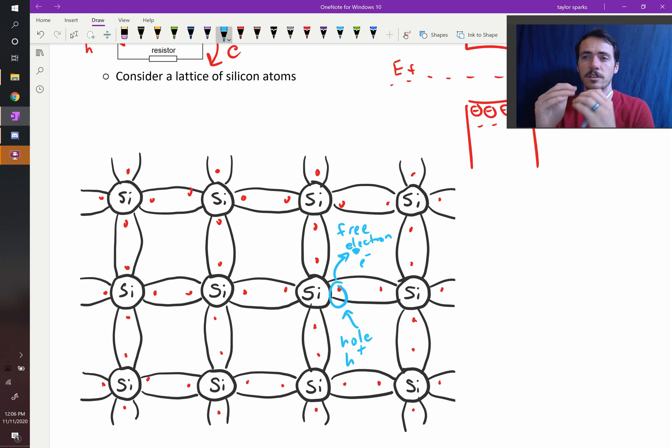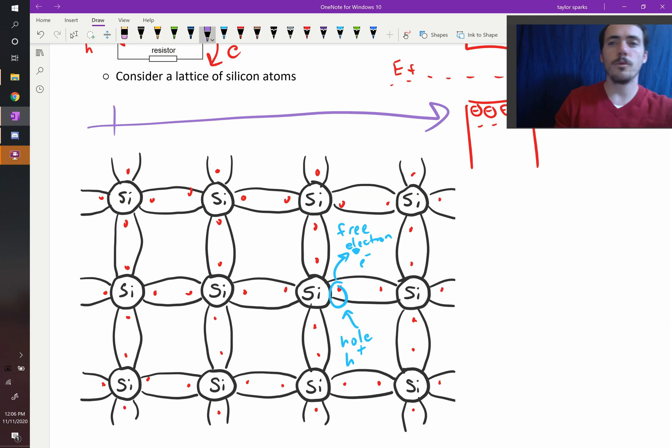But what happens is when we apply an electric field across this thing, if we apply an electric field across this silicon group of atoms, now these things which are charged, our hole and our electron, are going to move in response to that field. The electron is going to travel this way, and the hole is going to travel that way.